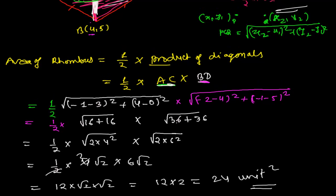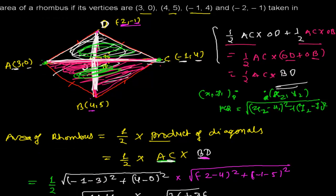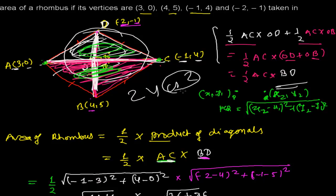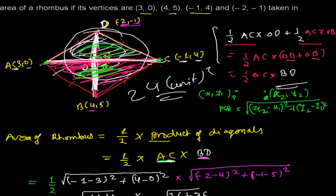So our area of this whole rhombus is 24 square units — whatever the unit may be, centimeter, meter, etc. I hope you understand this problem. I will be doing some more problems related to this, which will give you good concepts to find the area of different structures — different quadrilaterals, triangles, or any polygons using the distance formula or sometimes the section formula. Catch you in the next video, goodbye!